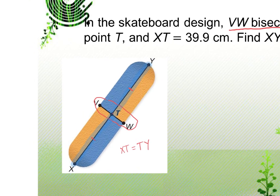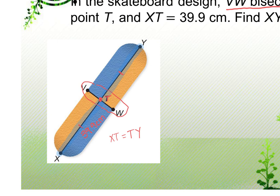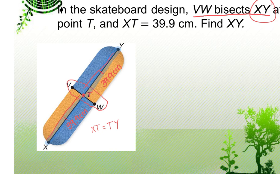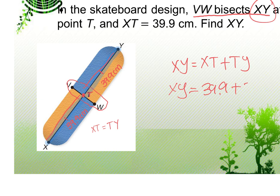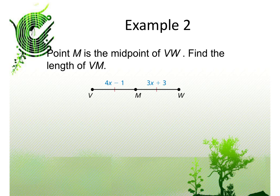Since VW bisects XY at point T, T is the midpoint. XT is 39.9 centimeters, so TY must also be 39.9 centimeters. Using the segment addition postulate, XY equals XT plus TY, so XY equals 39.9 plus 39.9, which gives us 79.8 centimeters. Always include your units in your answer.